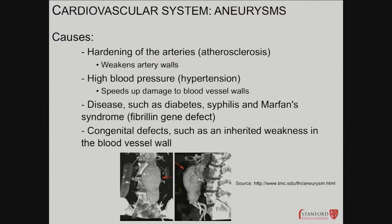Marfan syndrome is a disease where you see really tall, thin, lanky people with long arms and legs. They get aneurysms almost always by the age of 20 — it's sad, they have to deal with multiple heart surgeries.